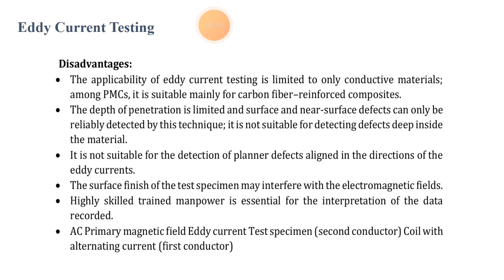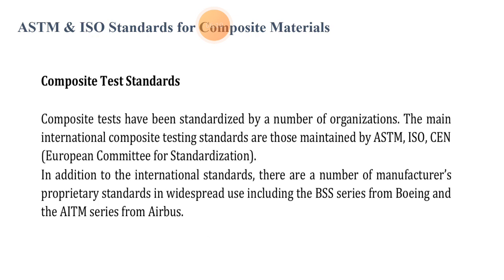In summary, the AC primary magnetic field interacts with the test specimen — the second conductor — excited by the coil carrying alternating current, which is the first conductor. In this way we finish all the NDT techniques, i.e., non-destructive inspection and testing methods.